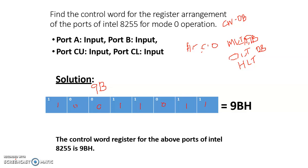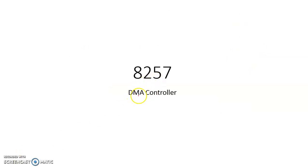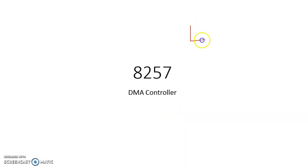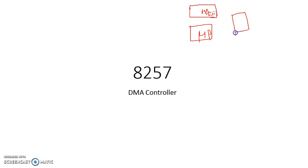Now let's move on to the DMA controller — Intel 8257 DMA controller, Direct Memory Access controller. What is DMA? The microprocessor will have to make communication — we have already seen it. The microprocessor always will have to make communication with either a memory element or an input or output device.